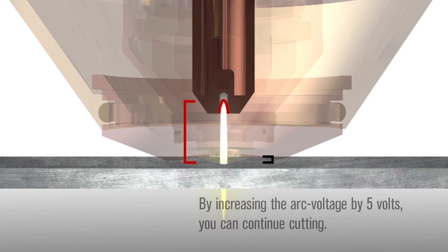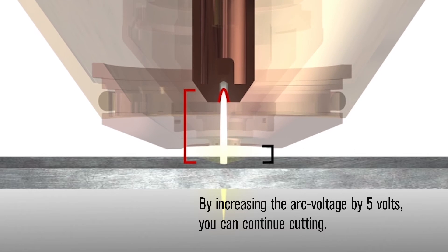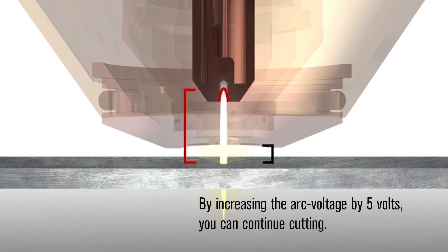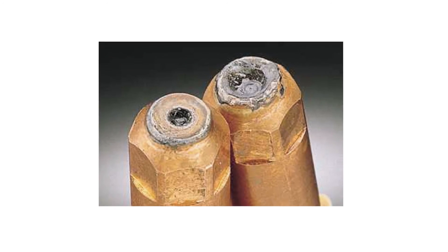By increasing the arc voltage by 5 volts, you can continue cutting with the same silver electrode and attain acceptable cut quality.